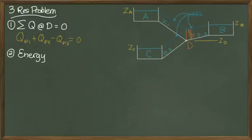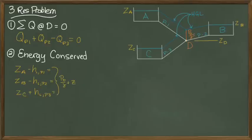We also use conservation of energy. Applying conservation of energy here means that the elevation of reservoir A minus the head loss in pipe 1, or the elevation of reservoir B minus the head loss in pipe 2, or the elevation of reservoir C plus the head loss in pipe 3, should all be equal to the elevation plus the pressure head at point D.